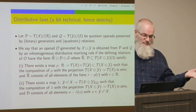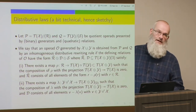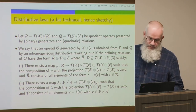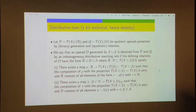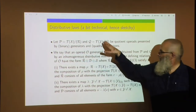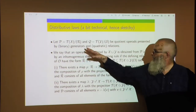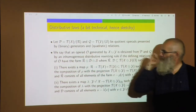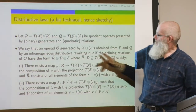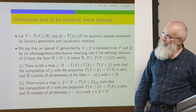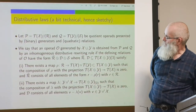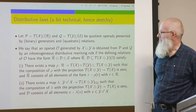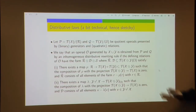This concept goes back to work in general category theory done 30 or more years ago. We have two operads given by two quadratic operads — quotient operads generated by certain operations and relations, assuming binary generators and quadratic relations. We construct a new operad O generated by the union of the two sets of operations, by an inhomogeneous distributive rewriting rule.